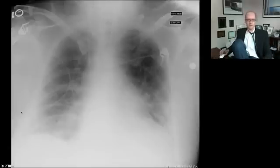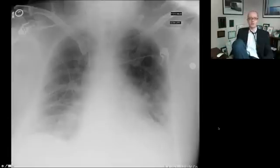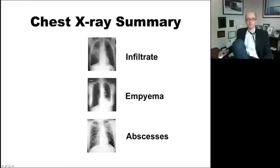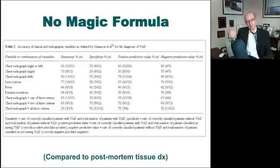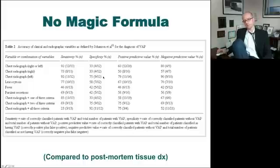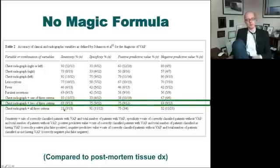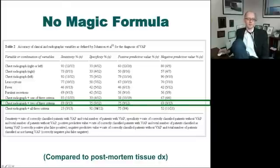Look for infiltrates focally, look for empyemas — which is what you'd suspect a pleural effusion to be if there's pneumonia — or abscesses. The problem is that when you're adding up symptoms, white count, and chest X-ray, there's no magic combination that gives you the answer every time. They all have sensitivity and specificity problems. Perhaps the best approach is two of three concerning findings plus a positive chest X-ray, but even that's not perfect.